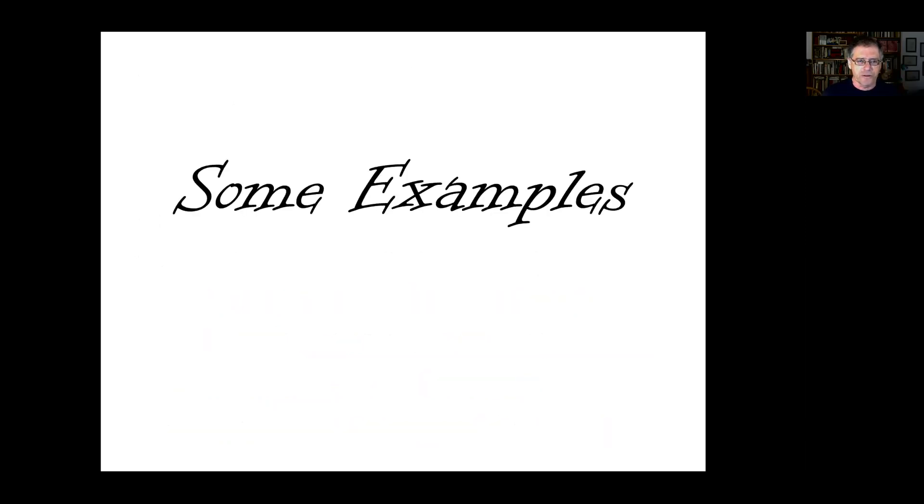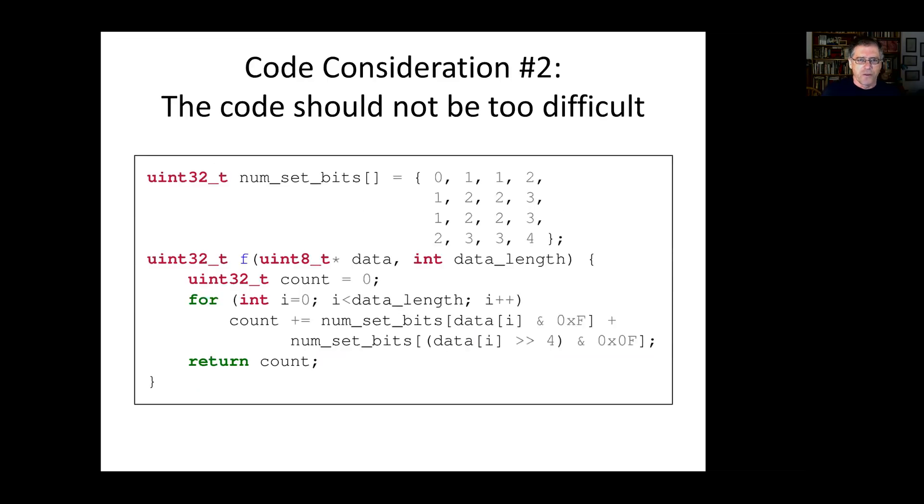Let me give you some examples. One of the main considerations regarding the selection of code is that it should not be too easy or too difficult. This is an example of code which turned out to be too difficult. It's pretty short, only 11 lines, and only three of these lines actually do anything. But they do this by using bitwise operations and hexadecimal constants to mask bits and so on. These are operations which are not very commonly used, so many people do not have experience with them. And as a result, the code turned out to be too difficult for experimental subjects.